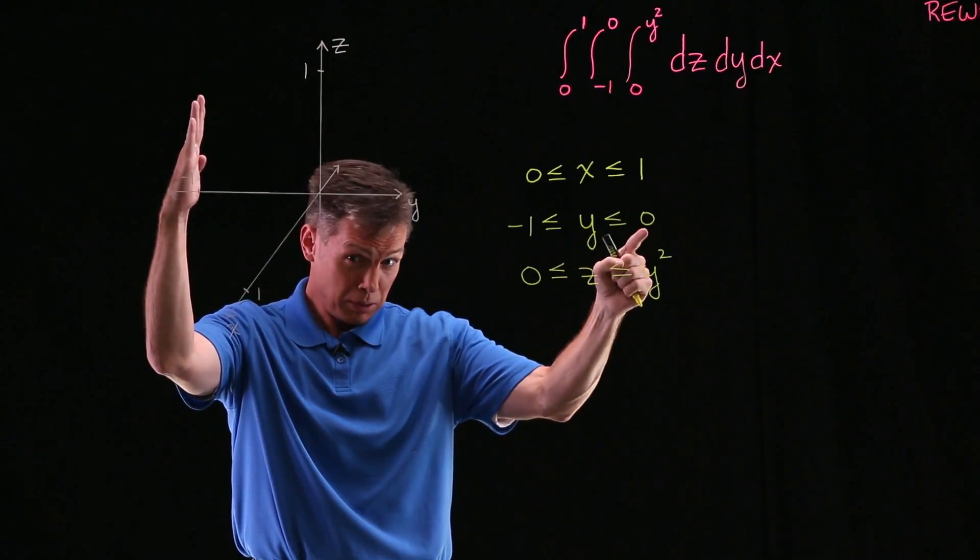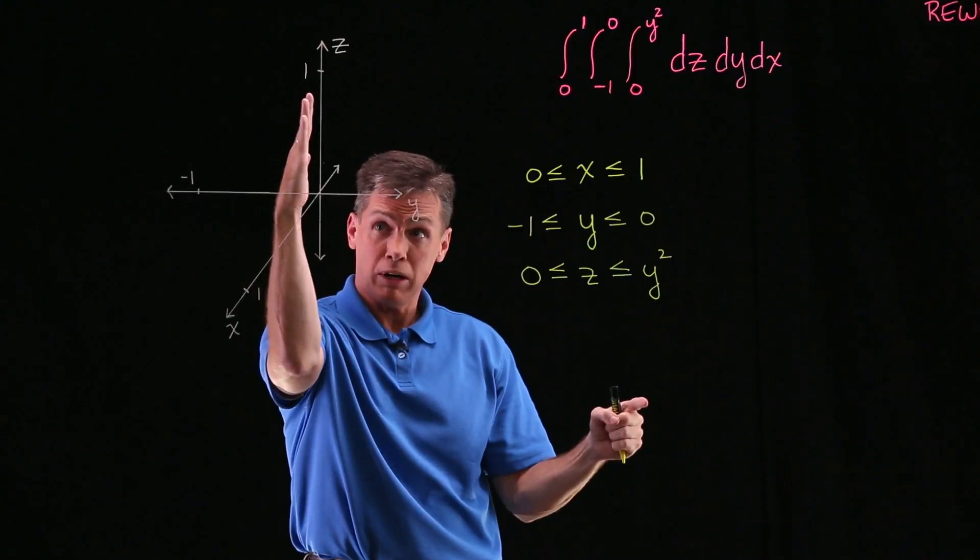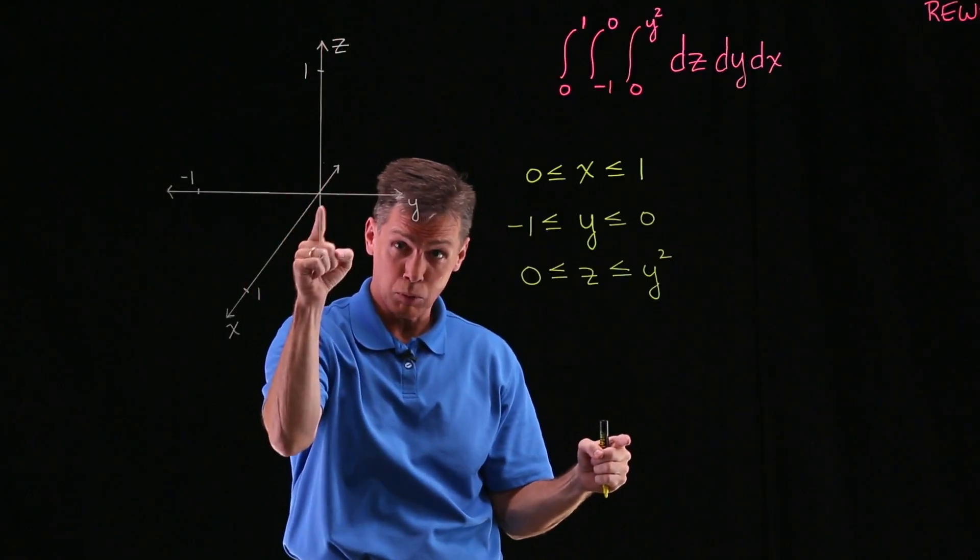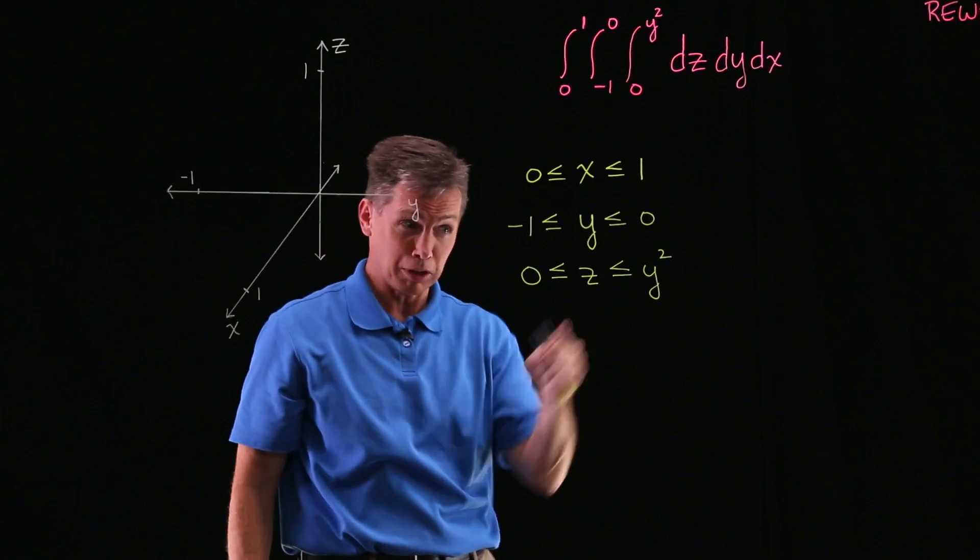And y should be no bigger than 0. So that means I'm not going to draw anything to the right of this z-axis. Because that would be y being positive. And I'm not going to do that.